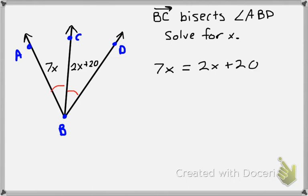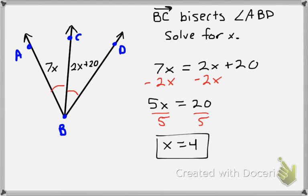And then all we need to do is solve for X. So I'm going to subtract 2X from both sides. And divide both sides by 5. So we get X equals 4. So you just have to know that a bisector creates two congruent parts.